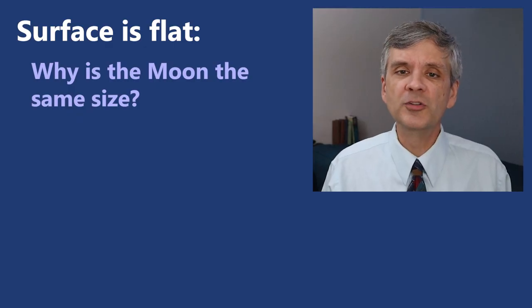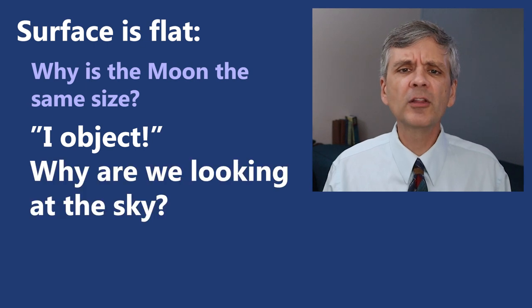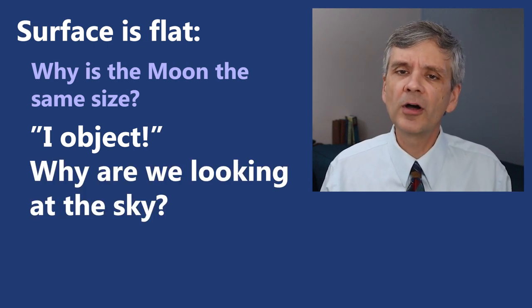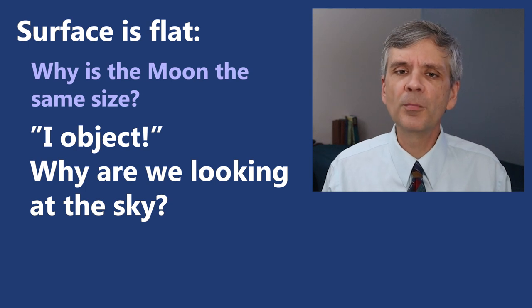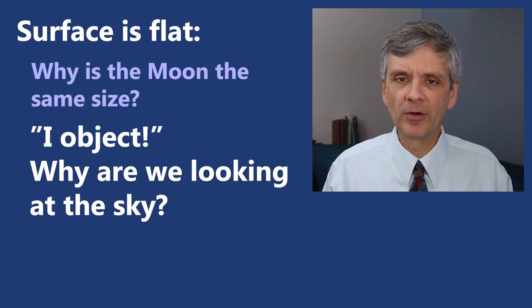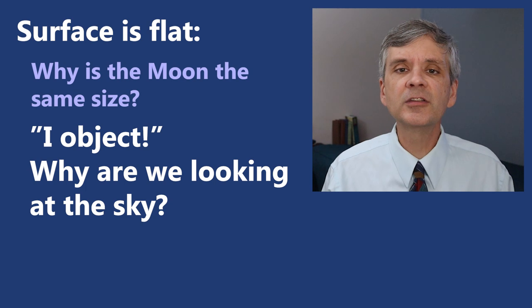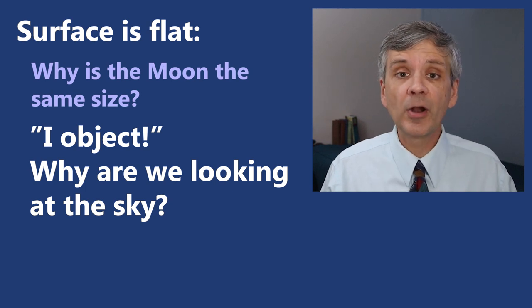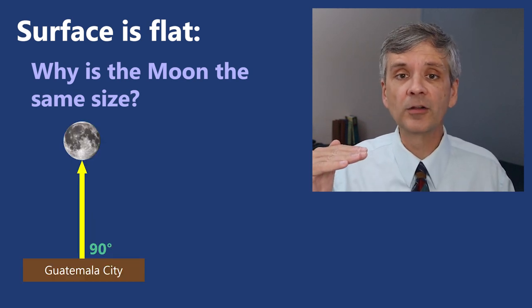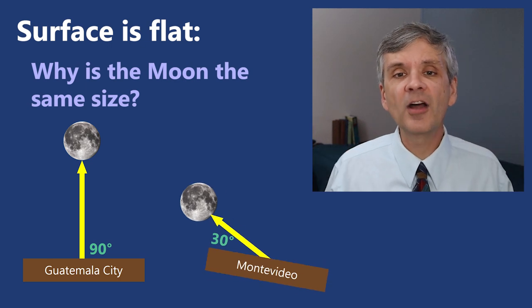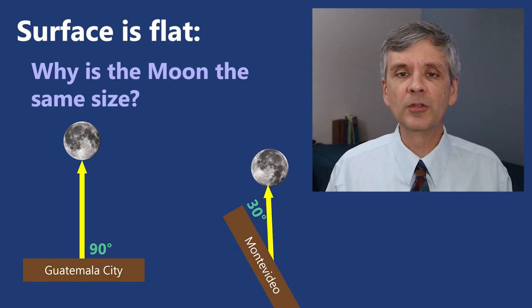Another answer would be to object to these observations, saying why are we looking at the sky to determine the shape of the ground? Well, these moon observations don't make a positive claim about the shape of the ground, just whether the ground is tilted in different directions. Is the ground in Guatemala City parallel to the ground in Montevideo? If not, that's enough to say that the surface of the earth isn't flat.